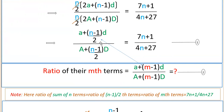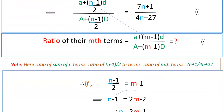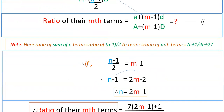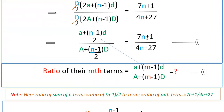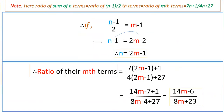From n minus 1 by 2 equals m minus 1, you get n equals 2m minus 1. Substituting n equals 2m minus 1 into 7n plus 1 by 4n plus 27 gives the ratio of mth terms: 7(2m minus 1) plus 1 divided by 4(2m minus 1) plus 27, which simplifies to 14m minus 6 by 8m plus 23. This is the ratio of the mth terms.